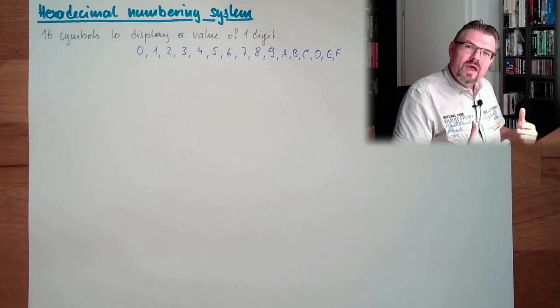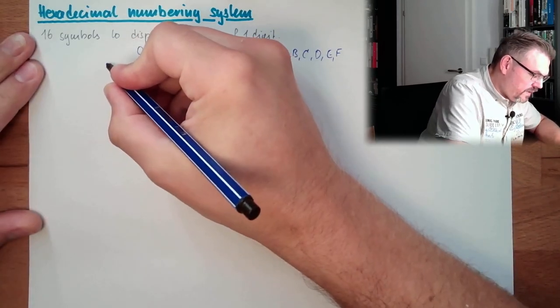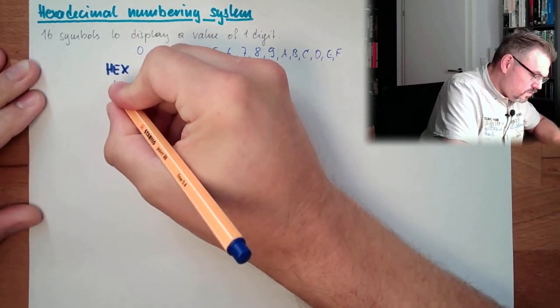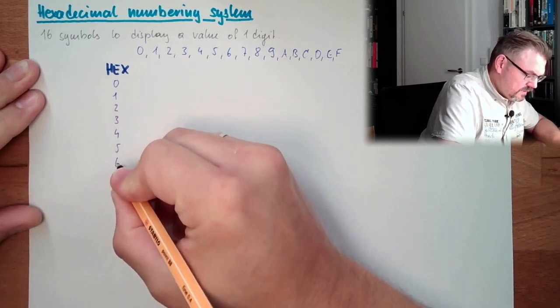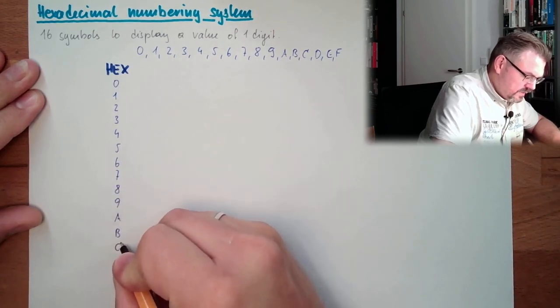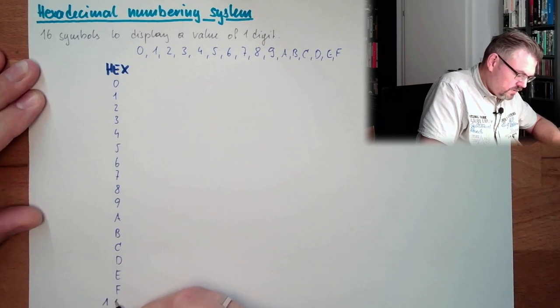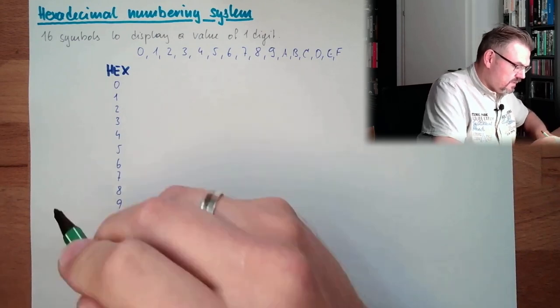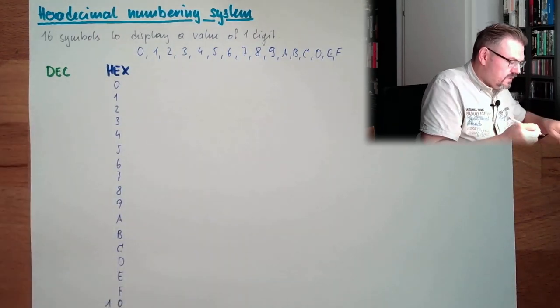And after we have used all the symbols here, let's write it down. Let's make a table. Hex: 0, 1, 2, 3, 4, 5, 6, 7, 8, 9, a, b, c, d, e, f. And now we're done. Now it's 1, 0. Next one. And in decimal representation, now I'll try to get this right, so I will use blocks of 4.